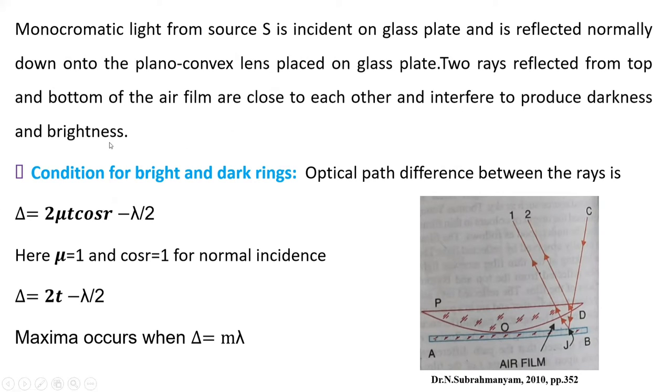And these two rays reflected from top and bottom of the air film are close to each other and interfere to produce darkness or brightness.